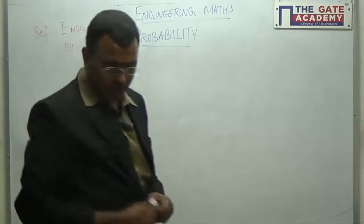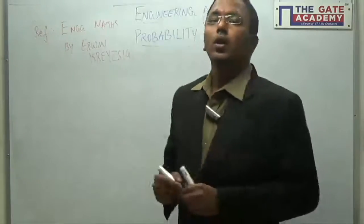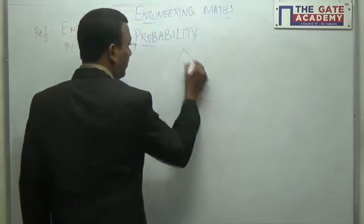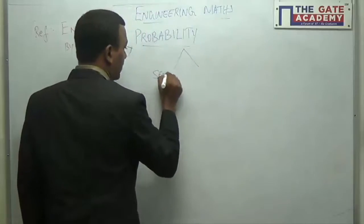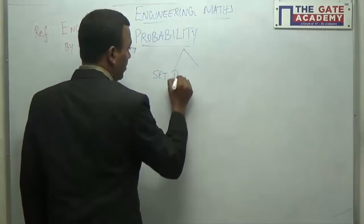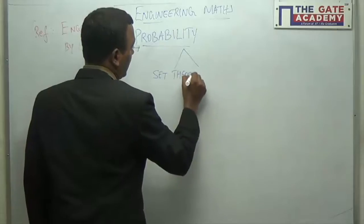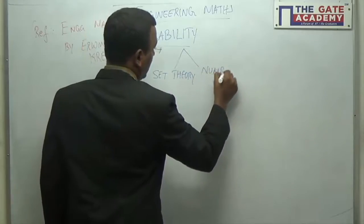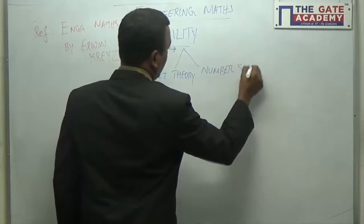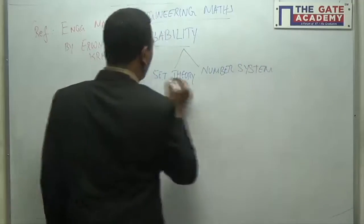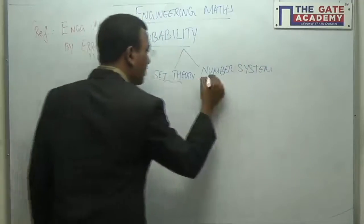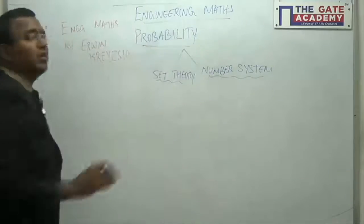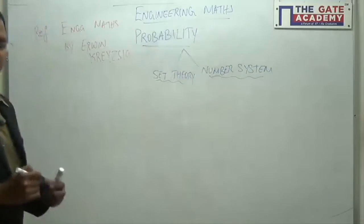Probability is basically derived from two topics in maths. One topic is called set theory and the other topic is number system. Before going into probability, we will try to understand some basics of set theory and number system so that we can do good justice to the discussion on probability.